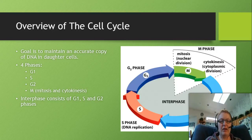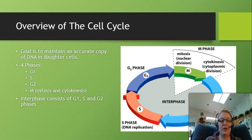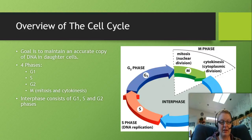There are two phases in the cell cycle: the M phase and interphase, which we break into four different phases total. Interphase is the longest phase - most cells are in interphase for the majority of their lifetime. The three phases in interphase are G1, S, and G2. The M phase is where we find mitosis and cytokinesis.